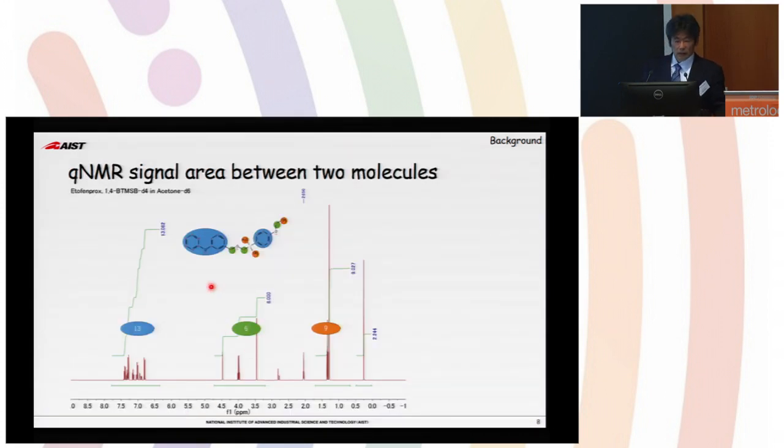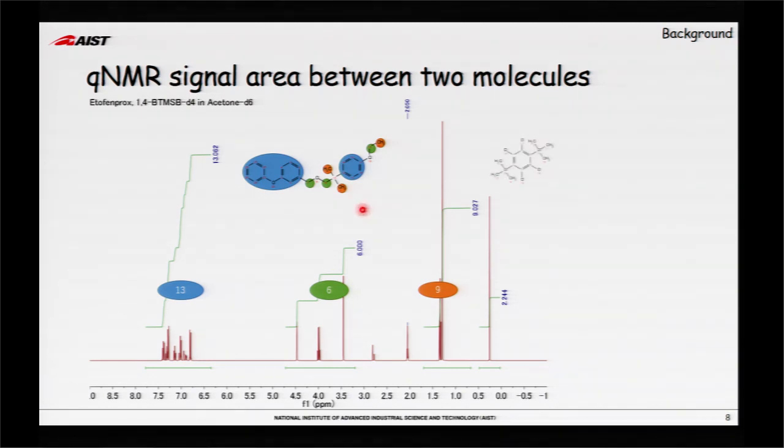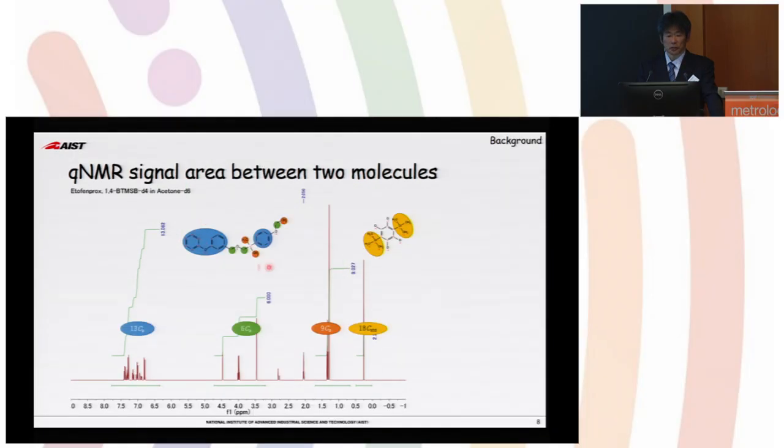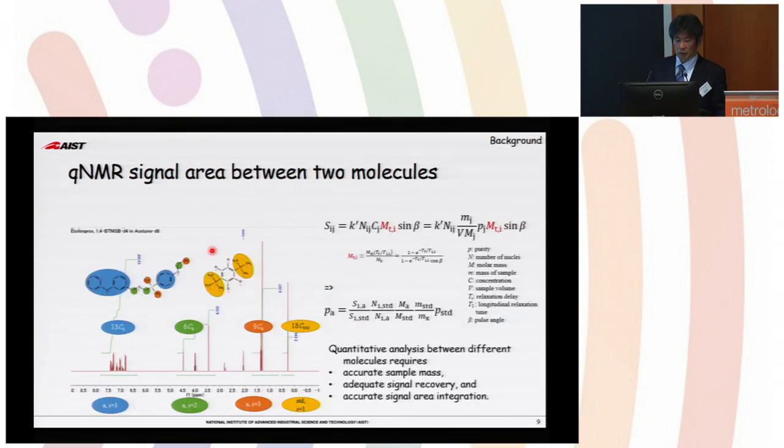So NMR has been used for structural determination. But if you put another sample in it and do the measurement with accurate integration, you can compare 18 protons from the 3 tertiary butyl groups to these 3 methyl groups, or these 3 O-methine groups, or the 13 protons from the benzene ring. So you can compare number of protons originating from this molecule versus number of protons originating from that molecule with the scale of number of protons, which is proportional to the number of molecules.